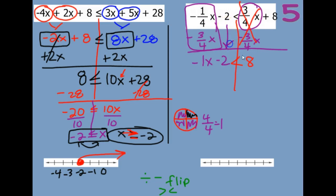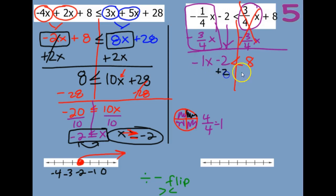And then there's a minus 2 there. So now we just have whole numbers. Get rid of your addition and subtraction here — I'm going to add 2. So I have negative 1x is less than 8 plus 2 is 10.